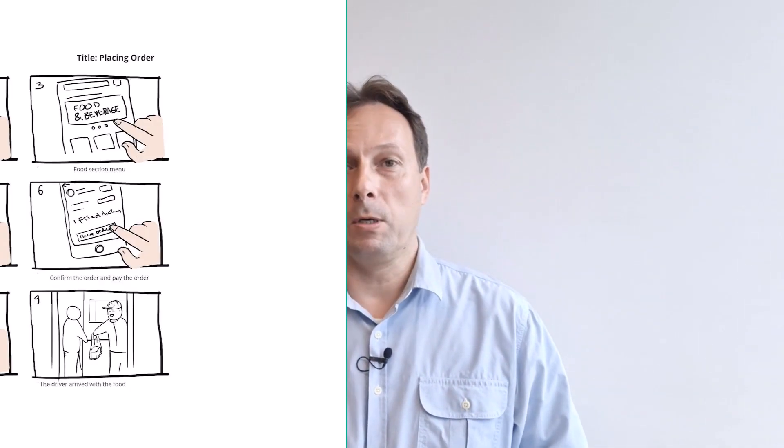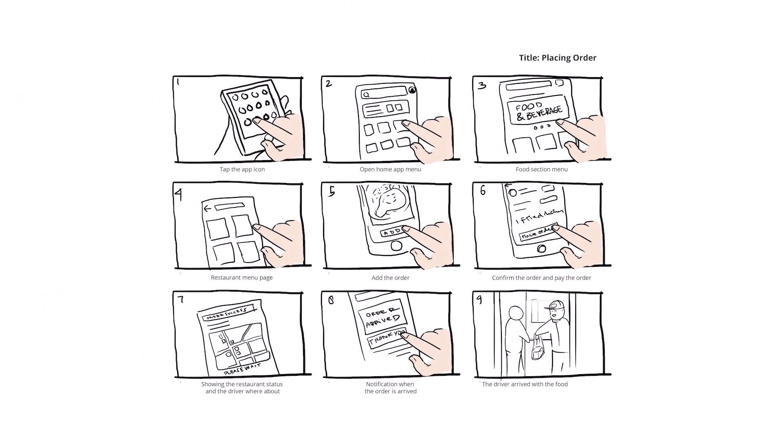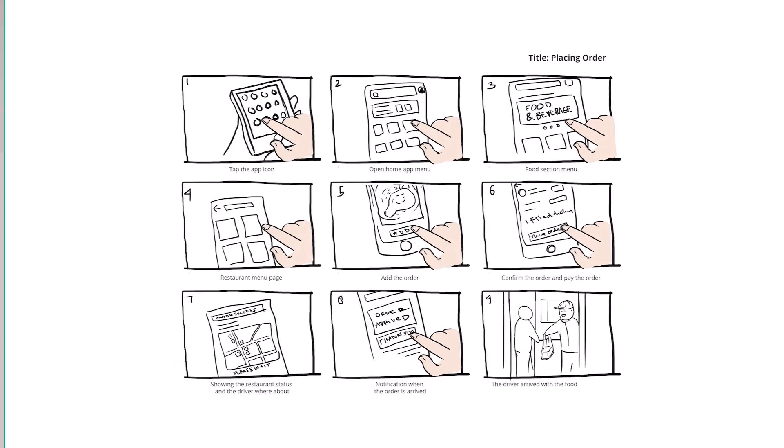Storyboards are one of the most interesting ways to express user requirements so that everyone involved in the product development can understand them. They provide a clear visual narrative that makes complex ideas more accessible. Product developers love storyboards because they provide a clear visual map of the steps users take, making it easier to plan and design the user experience or workflow.